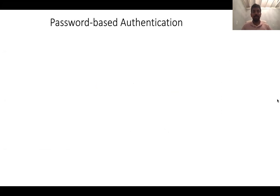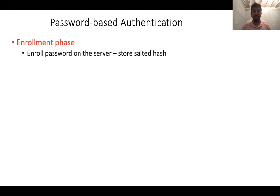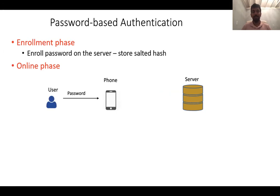First, let's look at how password-based authentication works today. There is first an enrollment phase during which the user enrolls their password onto a server. Typically, this is done in the form of storing a salted hash of the password. And then in an online phase, the user enters their password onto their device, say a mobile phone. The phone passes along this password or a salted hash version of it to the server. The server then checks whether the password matches with the one it had on its end and then authenticates the phone.